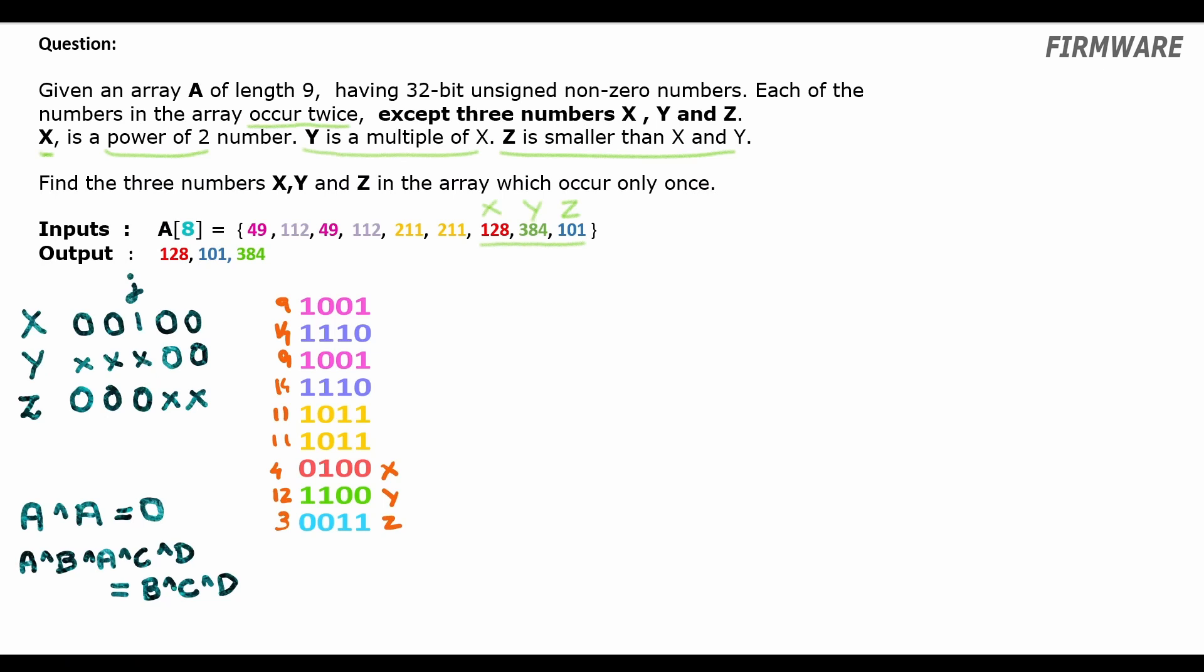Now, if we do an XOR of all these numbers, we have nine XOR nine as zero, fourteen XOR fourteen is zero, eleven XOR eleven is zero. And four XOR twelve XOR three will be 1011. That is eleven. Alright. Step one: Result 1 is XOR of all numbers in the array.